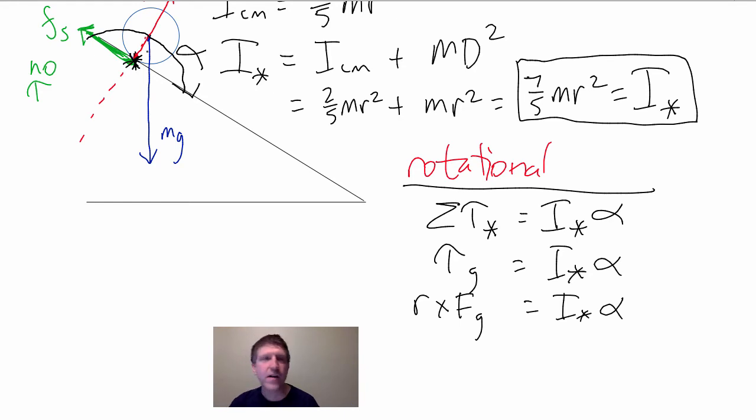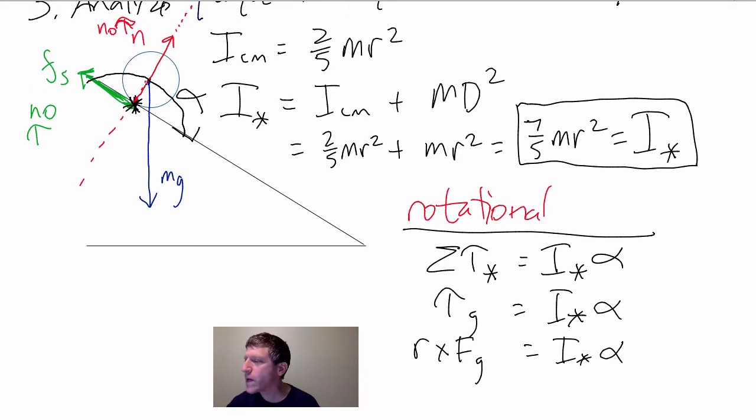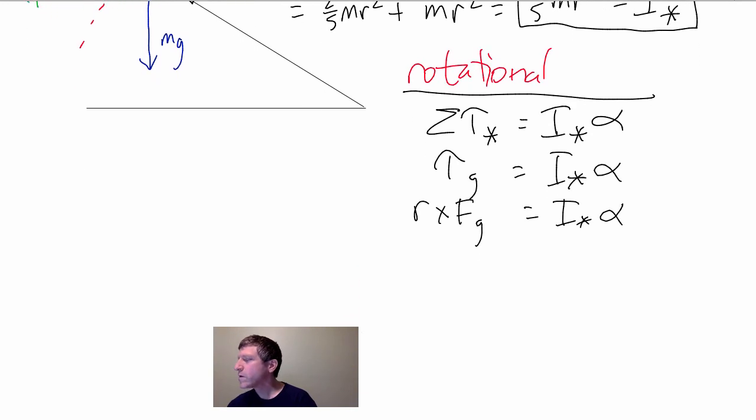What is that R? Well, notice that the R is always the displacement from the axis of rotation to the point of force application, which is that. That is R right there. That is R. And that's just the radius of the sphere. So, this is going to be the cross product gives us R F G times the sine of the angle between them.